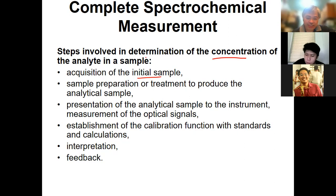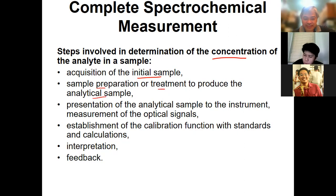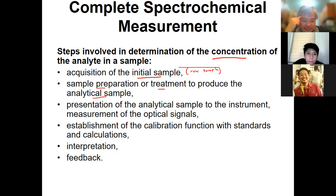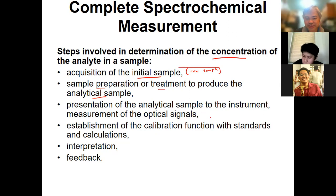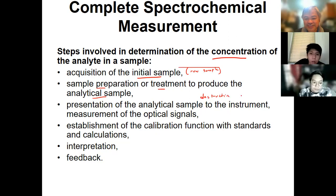Once we have the sample, the next thing we do is sample preparation or treatment to produce your analytical sample. So from your raw sample, it becomes an analytical sample. This is the one that we're going to use for analysis. The next step is how we present your analytical sample to the instrument — there's a destructive way of introduction and a non-destructive way.